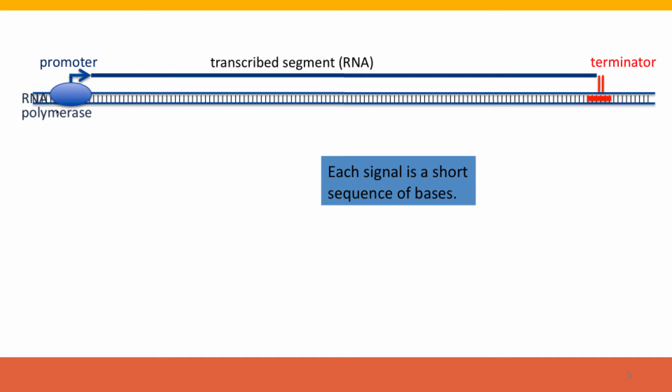It's recognizing two signals on the DNA. So first, it recognizes a sequence that's effectively a start sequence. That's the sequence called the promoter. And the promoter tells RNA polymerase, start here to make RNA.